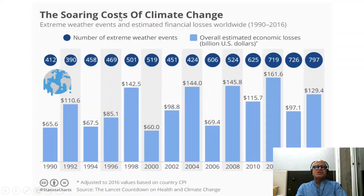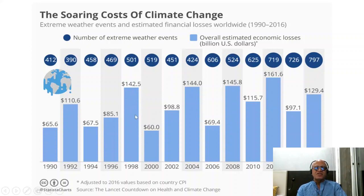Looking at the soaring costs of climate change: extreme weather events and estimated financial losses worldwide from 1990 to 2016 show an increase in number of extreme weather events over this period. There are year-to-year variabilities in the cost of these disasters, but the minimum numbers have gone up from 65 to 97, and the maximum numbers have also gone up — from 11 to a top of 161 and 129.